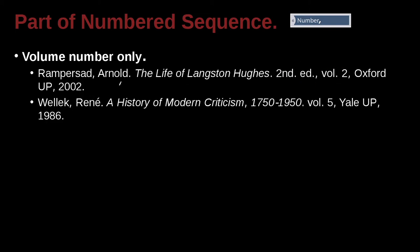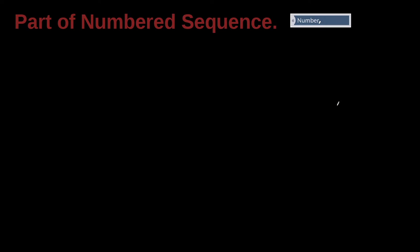Wellek Renee is the author — last name first, first name last — 'The History of Modern Criticism: 1750 to 1950,' that's the title of the book. It is Volume 5, Yale University Press, 1986. So you can have the volume without a number; it depends on the publisher. But this is exactly what we're saying — this helps you to find that specific book.